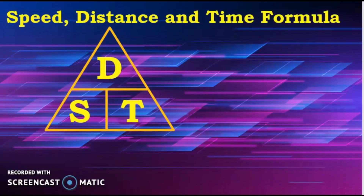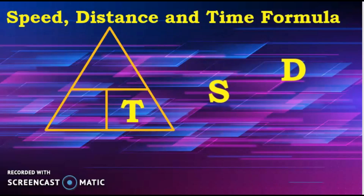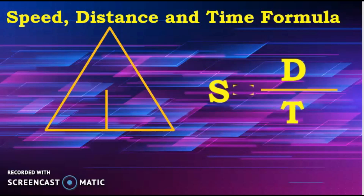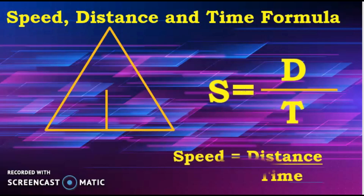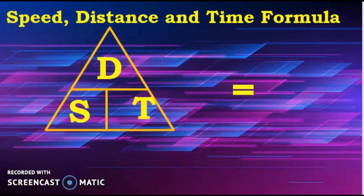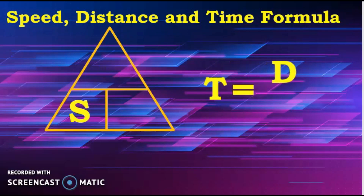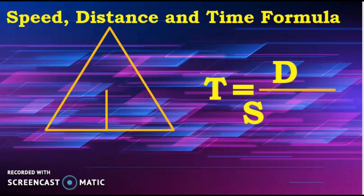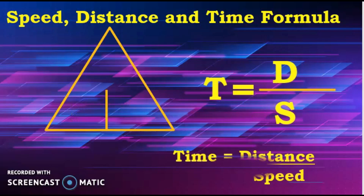For speed, distance, and time formula: if speed is missing, that is D over T — speed equals distance divided by time. And if time is missing, time equals D over speed — time equals distance divided by speed.